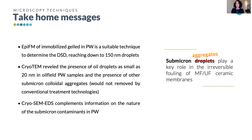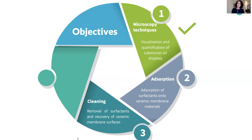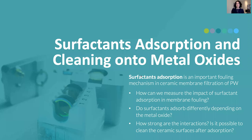Moving on to objectives two and three — adsorption and cleaning of surfactants — these were based on the same set of experiments. Our hypothesis was that surfactant adsorption is an important fouling mechanism in ceramic membrane filtration. This made us wonder: how can we measure the impact of these surfactants on metal oxides, how strong are these interactions, is it possible to clean the surfaces afterwards, and do surfactants adsorb differently depending on the type of metal oxide?